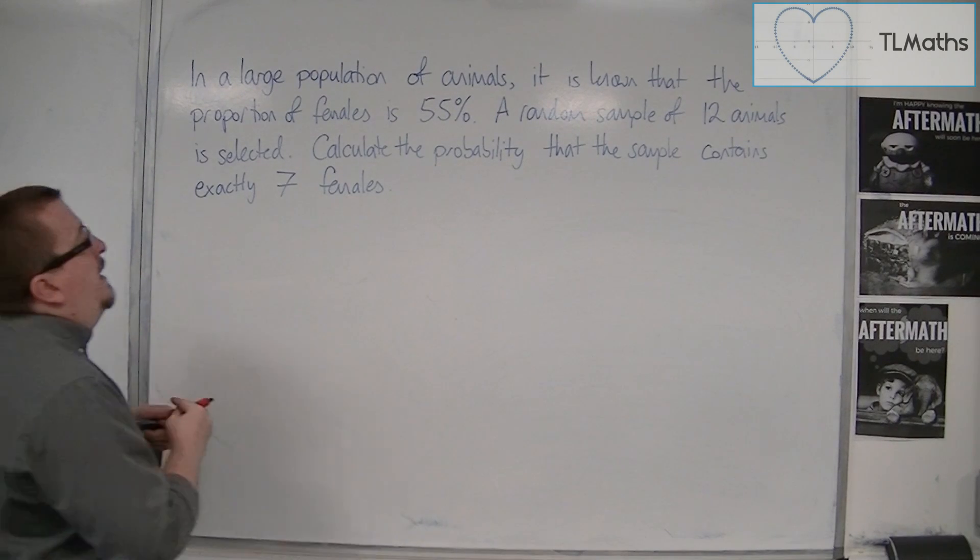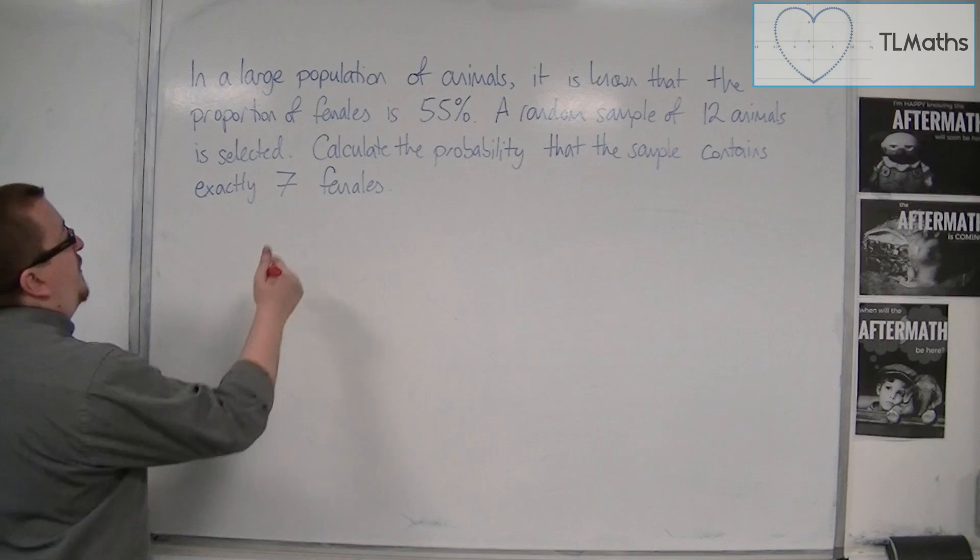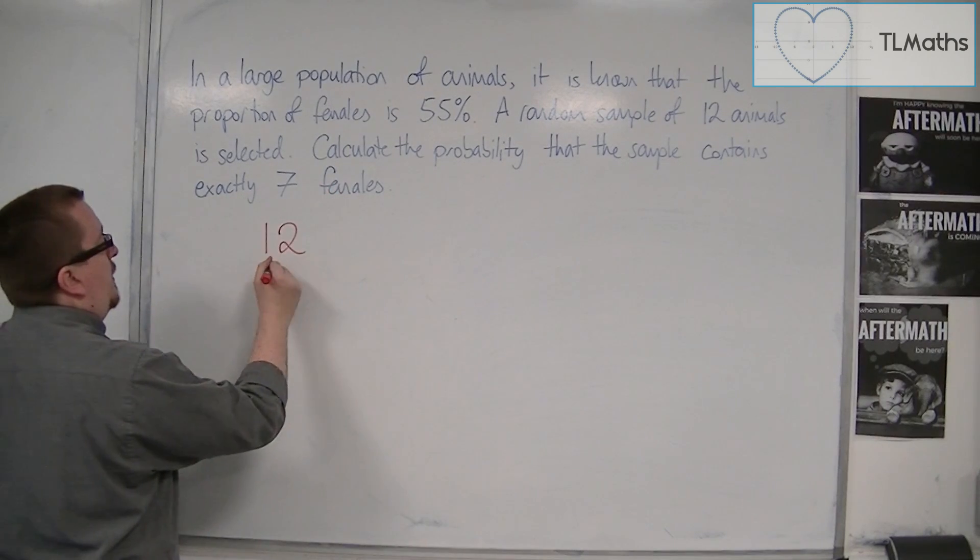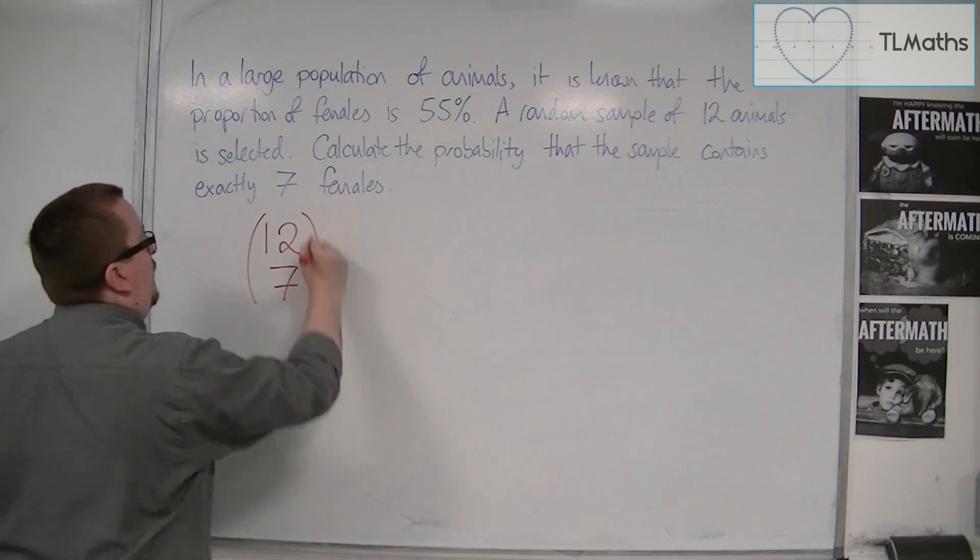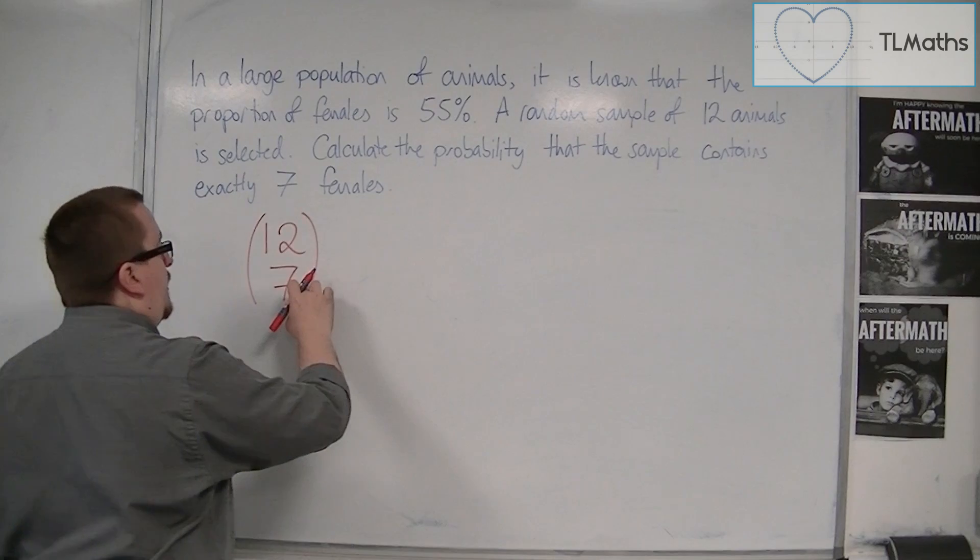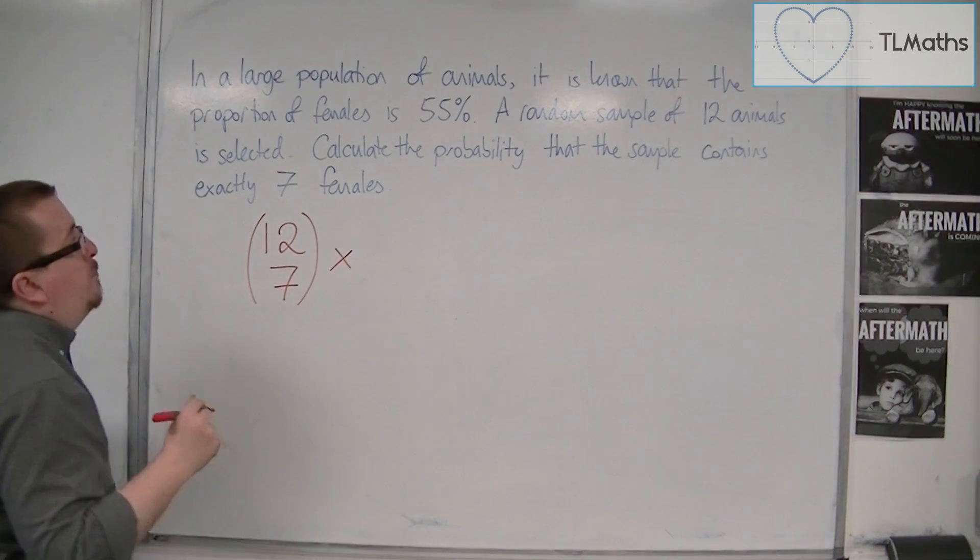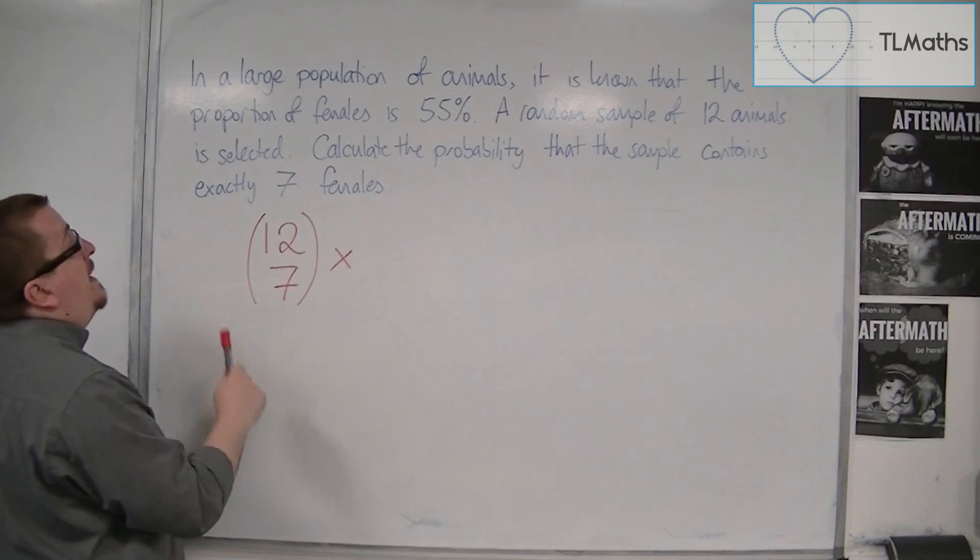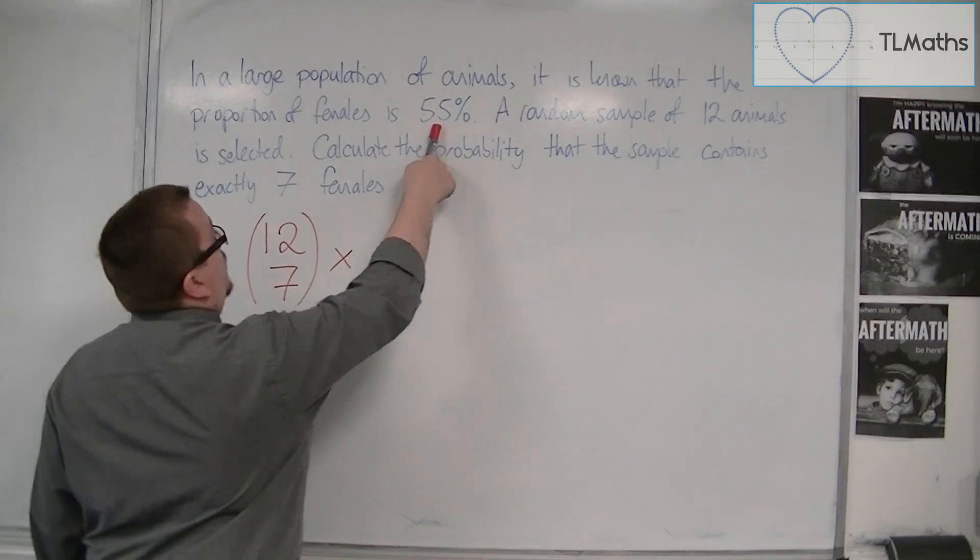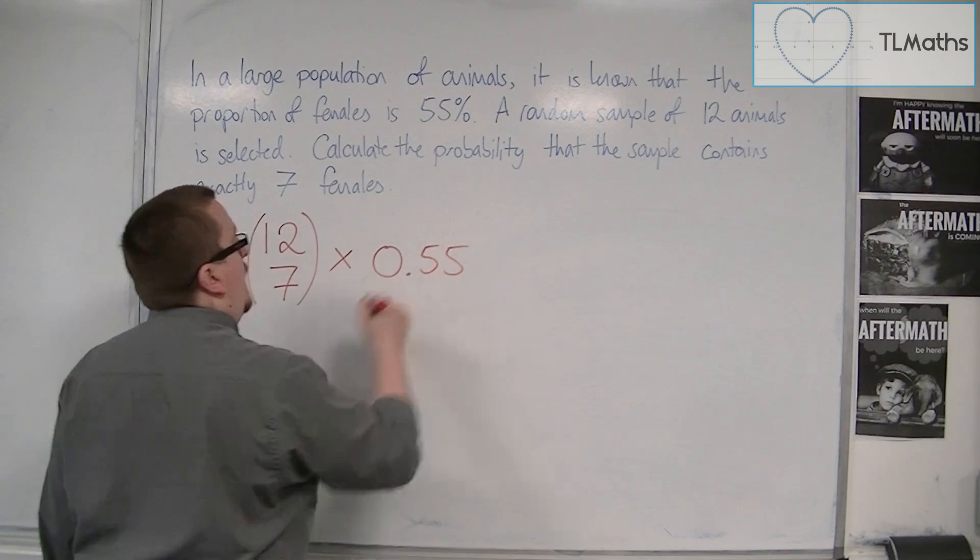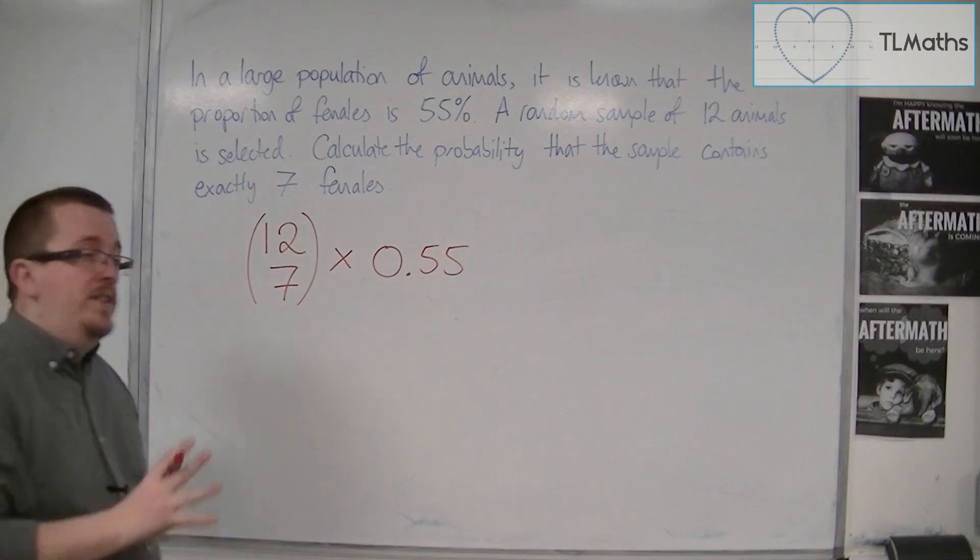So in a random sample of 12 animals, so out of 12 animals, I need 7 females. So this is where the NCR button comes in. So 12 NCR 7 times the probability of success. So the success here is choosing a female. So that's 0.55. And I want that to happen 7 times.